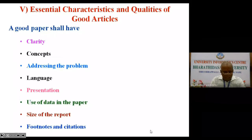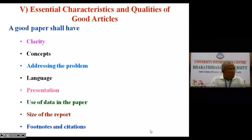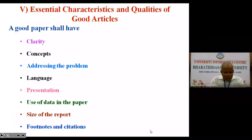Another area I would like to share with you is the essential characteristics and qualities of a good article. There are three qualities according to me. A good paper shall have, number one, clarity of ideas — there must be clarity, which is very very important. The second one: use of concepts — any researcher should use some concepts at least. The third one: addressing the problem — specifically, a socially relevant problem. We are all commerce, management, and economics scholars, so we should focus on business problems. Then only will the business community welcome and use our research findings. The fourth quality is language — a minimum standard of English, simple language without mistakes, is very very important.